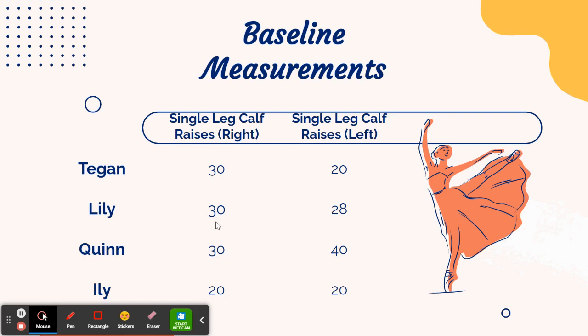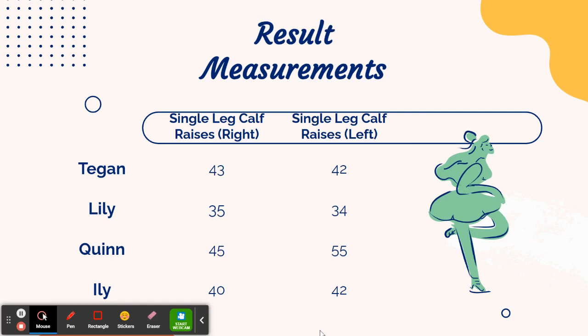To measure the results of my program, I chose to count how many single-leg calf raises my clients can do on each leg before fatigue. For my baseline measurements, as you can see, the majority of my clients were around 30 on the right and around 30 on the left as well. The exact average for the right was 27.5 and for the left was 27. After two weeks of switching between linear and side days every other day, the average single-leg calf raises for the right was 40.75 and for the left was 43.25 — a large improvement after the program.